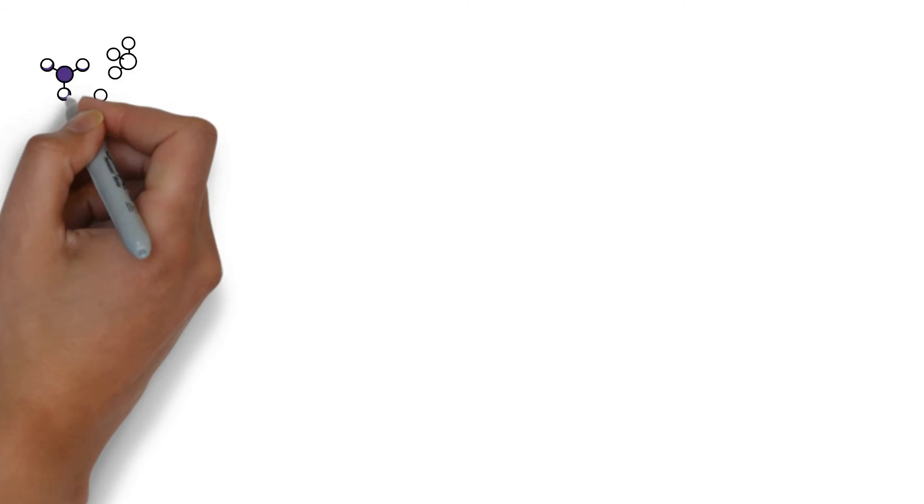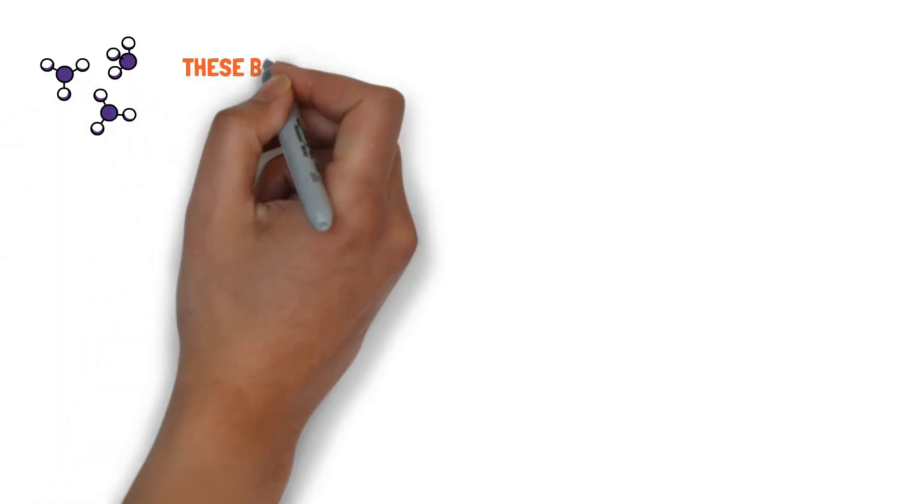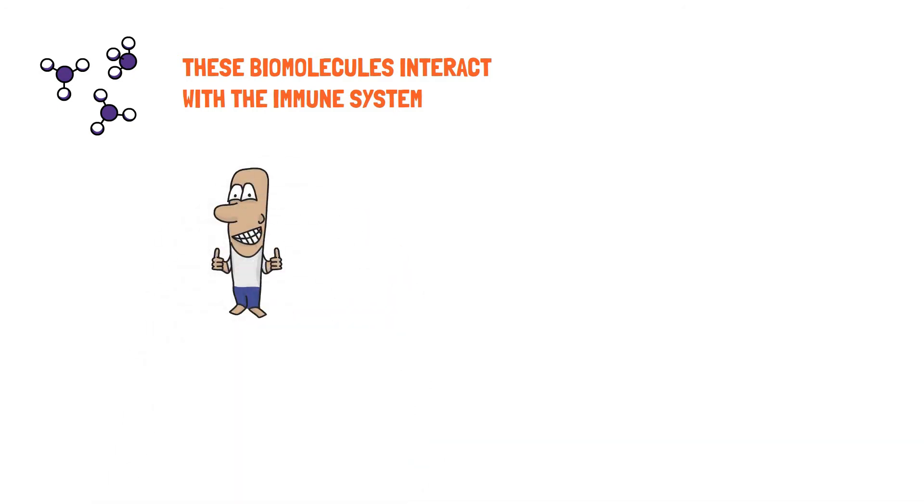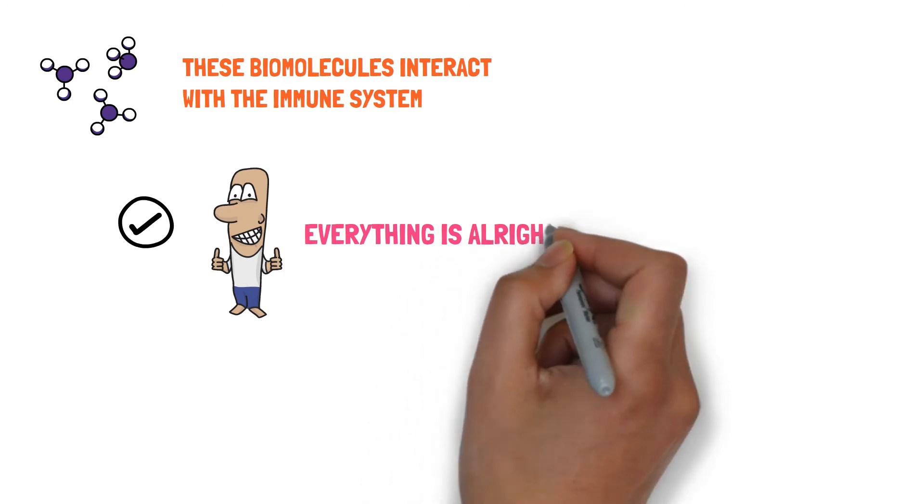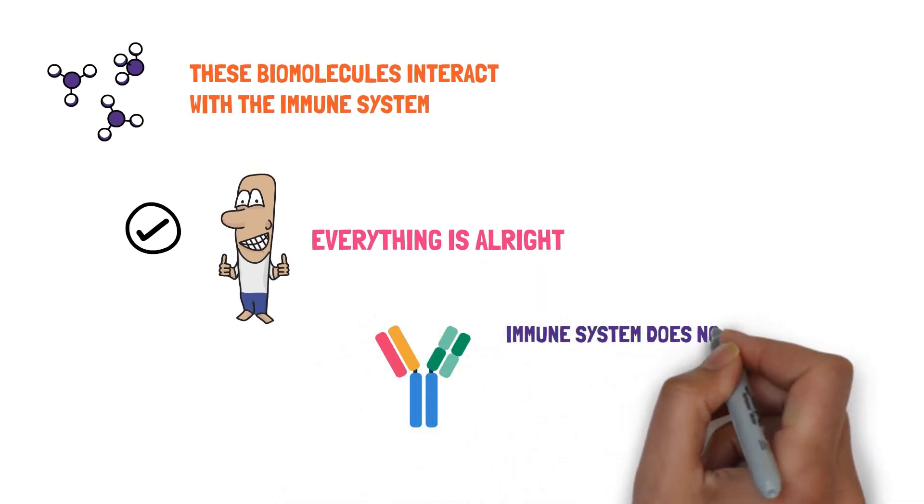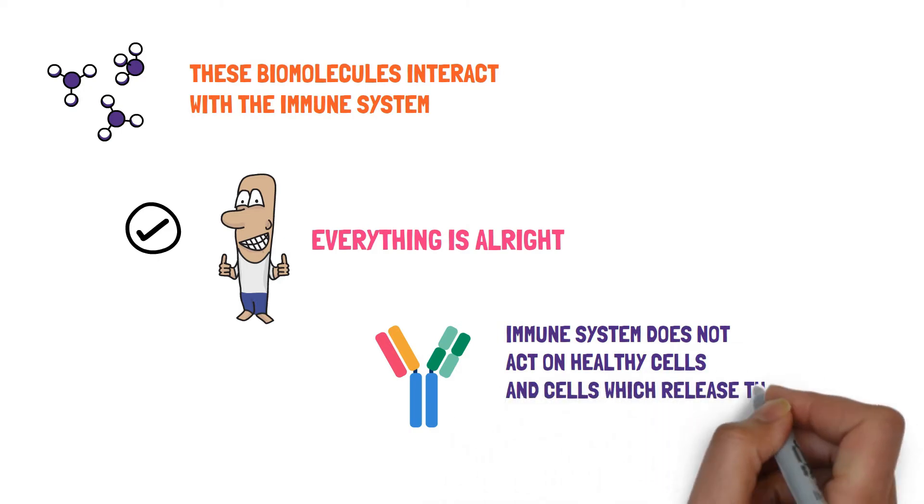The immune system can also interact with these biomolecules and when they do so they think that everything is alright. The immune system does not act on healthy cells and the cells which release these biomolecules are protected from the human immune system.